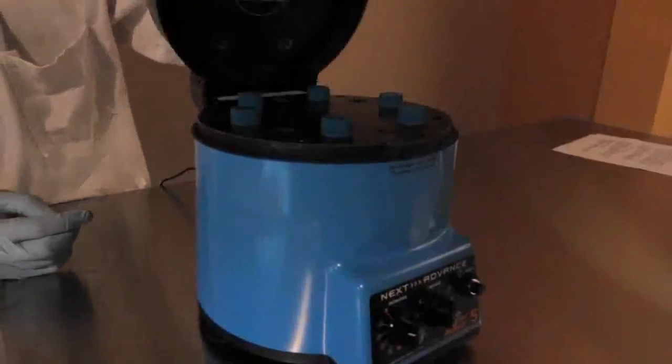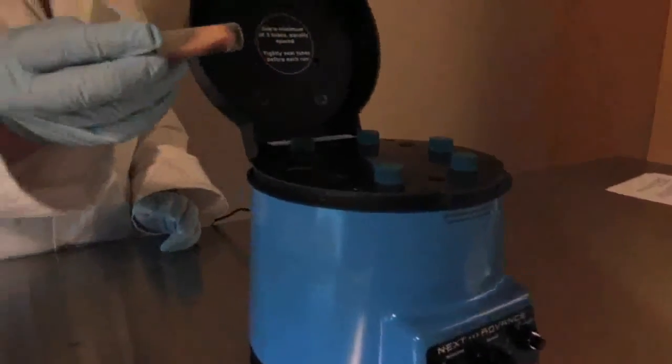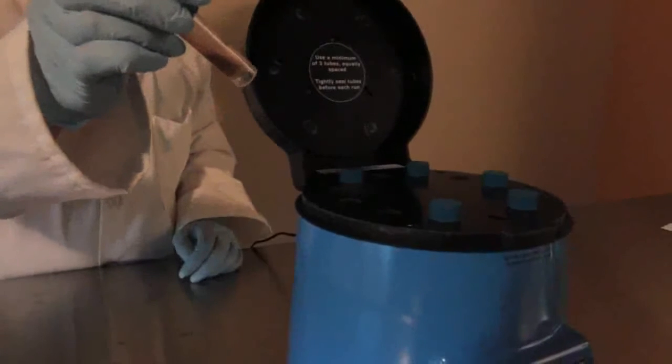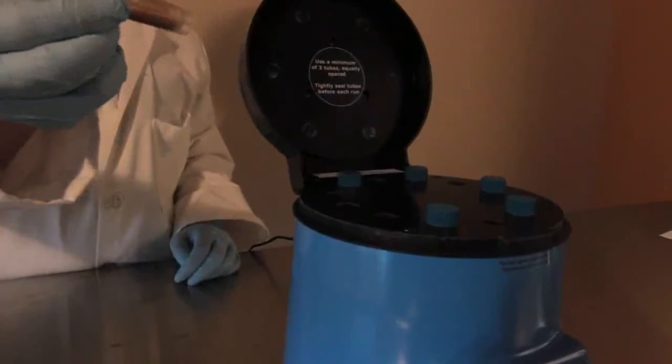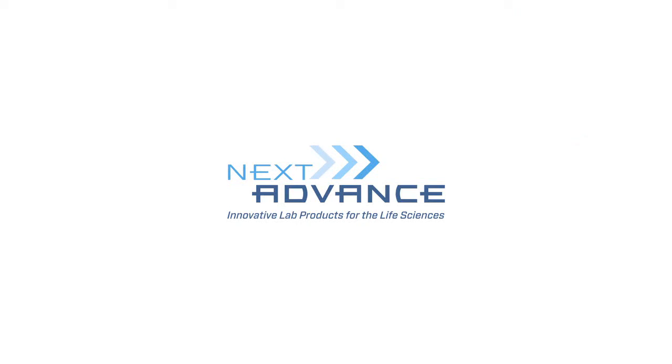Examine your samples. If you see unhomogenized pieces, place them back in the Bullet Blender and homogenize for another minute or two at speed 10. Now it's time to proceed with your downstream application.